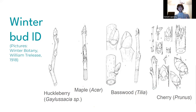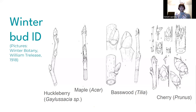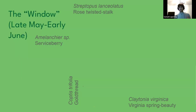This is from an old book called Winter Botany — there's a whole branch of botany interested in winter buds. You have the huckleberry, the maple, the basswood, and the cherry, and all of these either have alternate or opposite leaves, so the buds follow the same characteristic. The spring window is my favorite period of the year because you get the serviceberry and the gold thread. Gold thread here has six petals — is it a monocot, is it a dicot? There's an exception to the rule; some plants have varying amounts of petals.